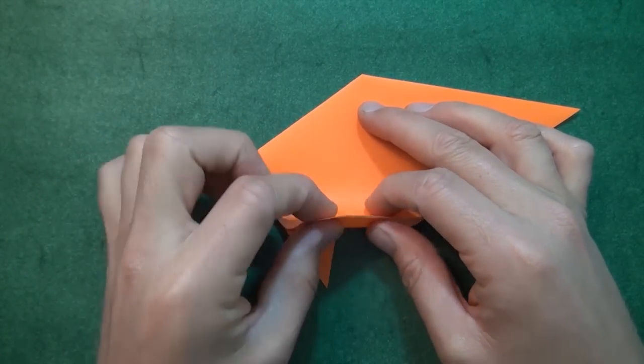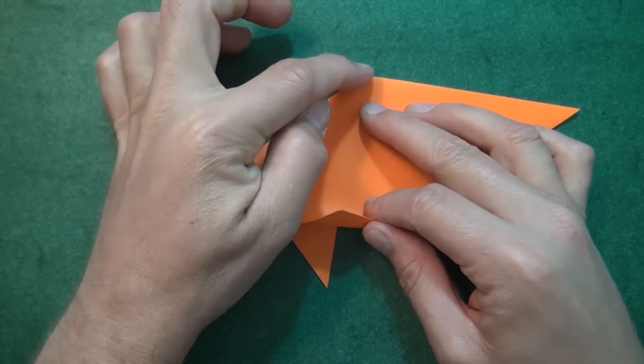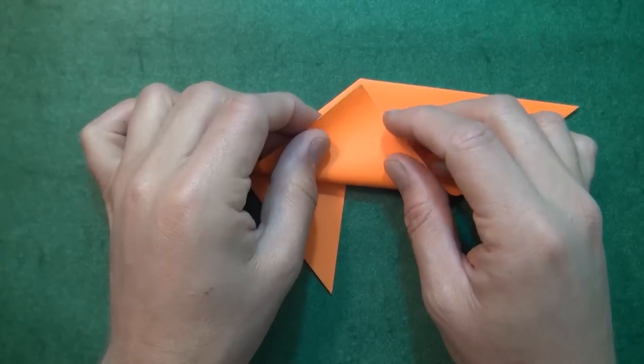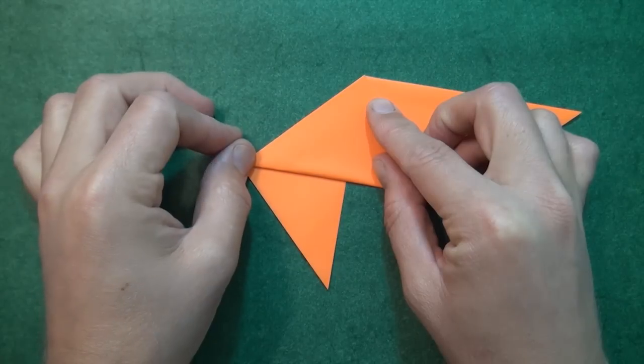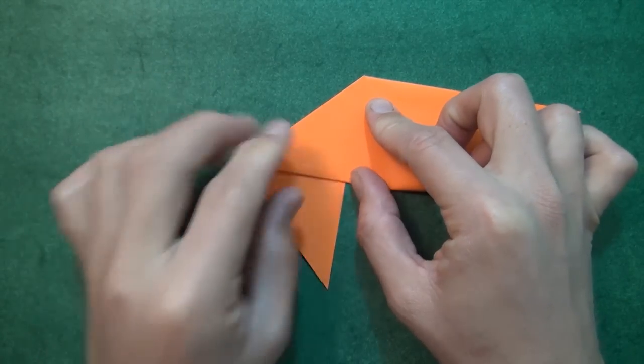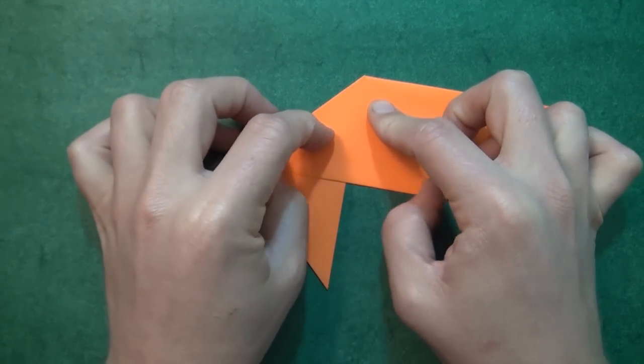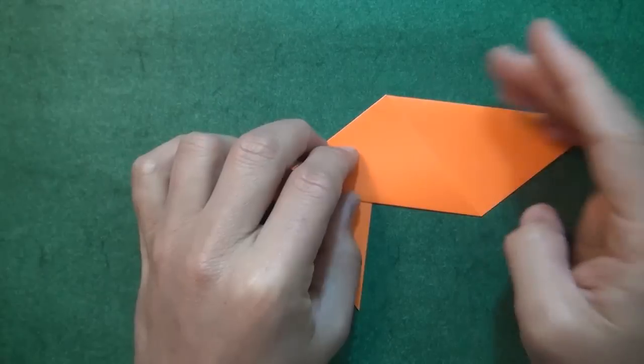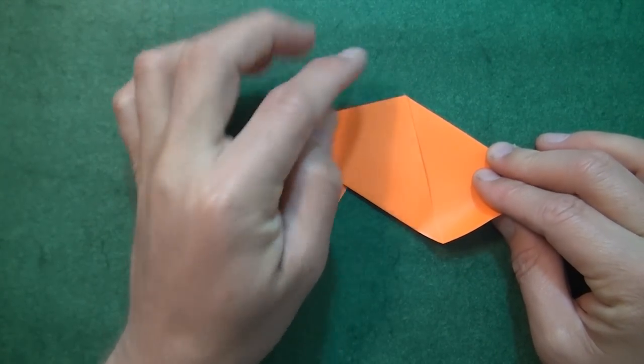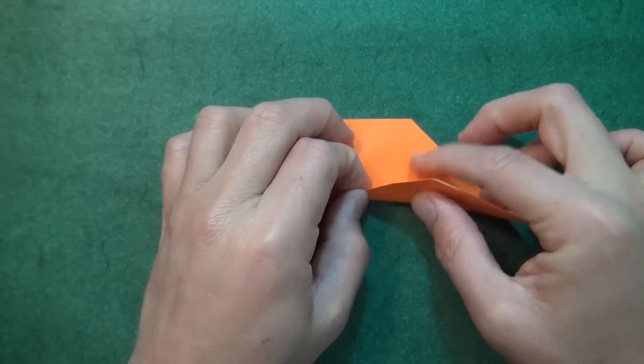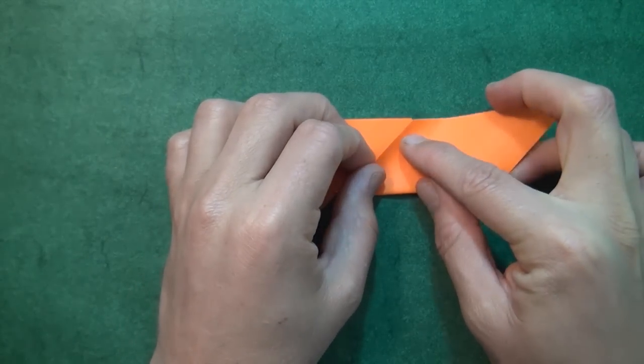And now let's fold these two flaps up to this point. And now let's fold this corner up to here. Try to make your folds exact.